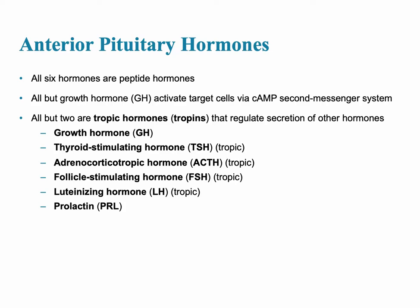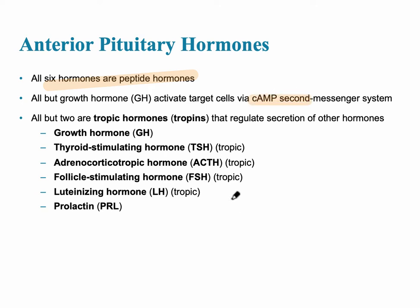The anterior pituitary gland is called the adenohypophysis, and it has six hormones that are all peptide hormones. All of them, except for the growth hormone, activate target cells via the second messenger system, and that second messenger is cyclic AMP.